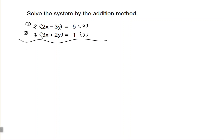My second equation, I want to make this 2y into 6y, so I need to multiply by 3. So, my new equation 1, after multiplying by 2, is 4x minus 6y equals 10. Equation 2, after multiplying by 3, is 9x plus 6y equals 3.